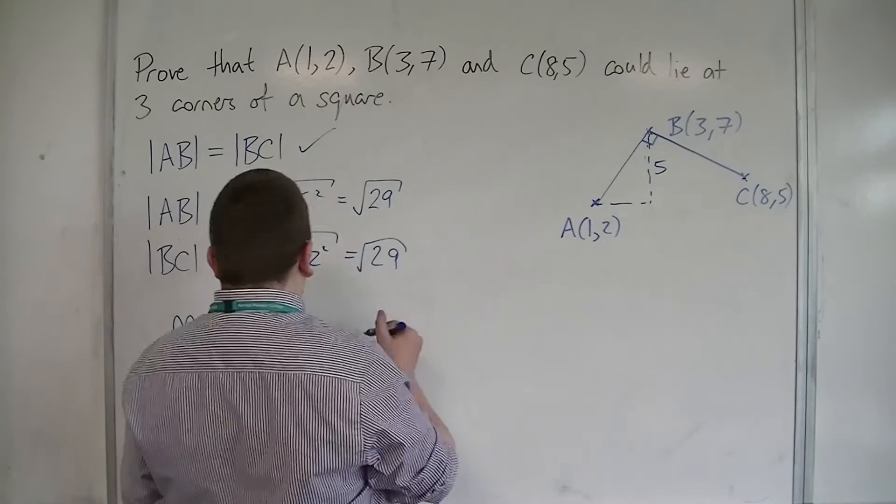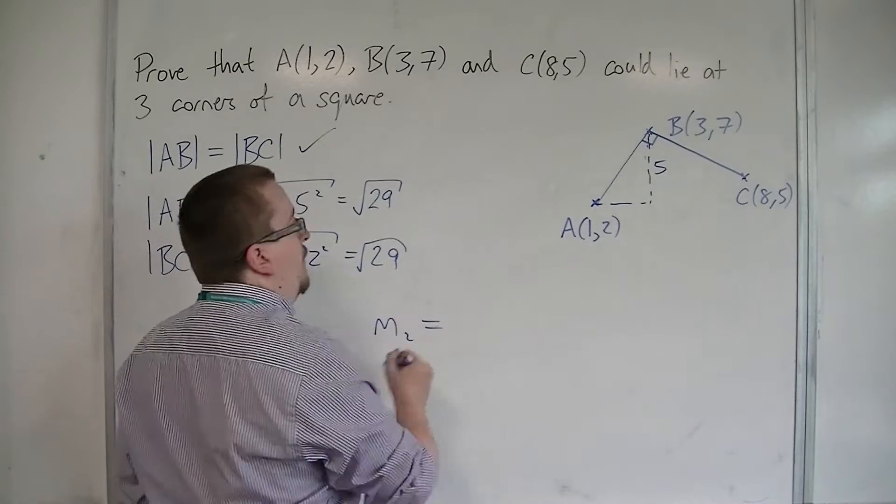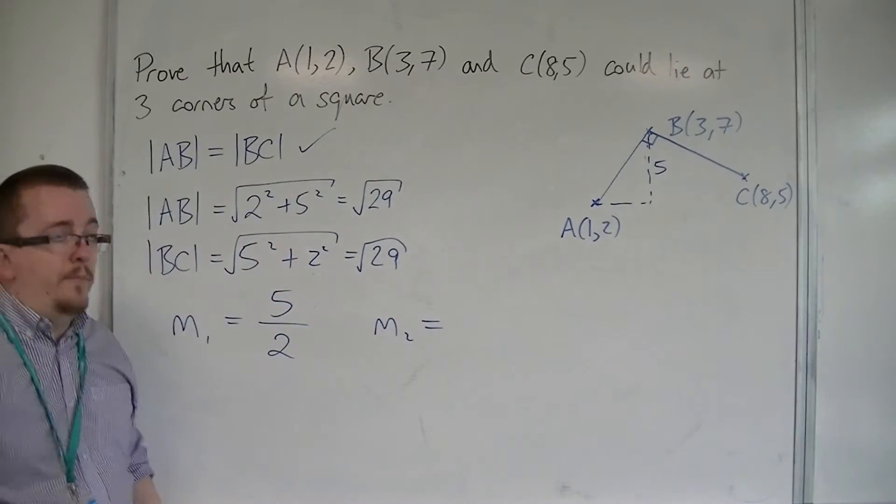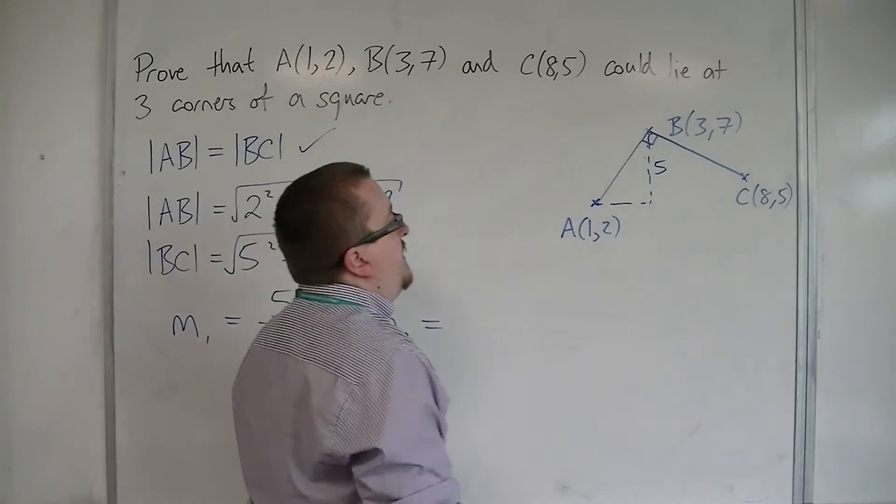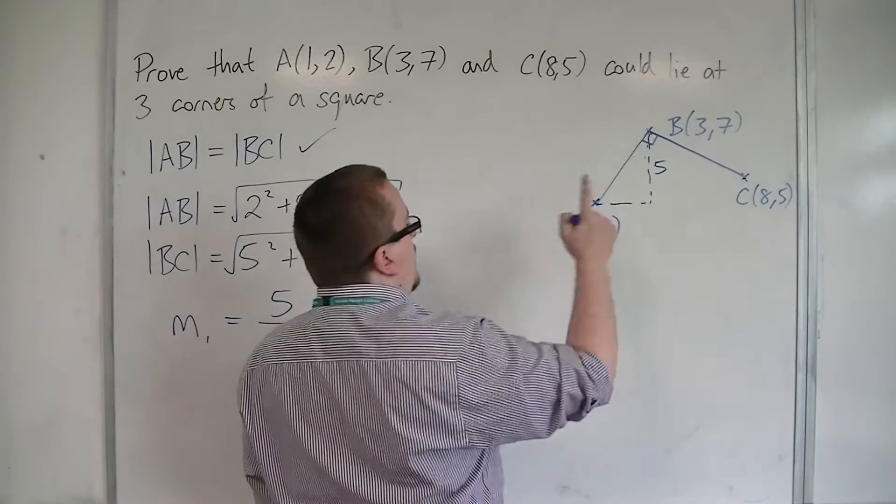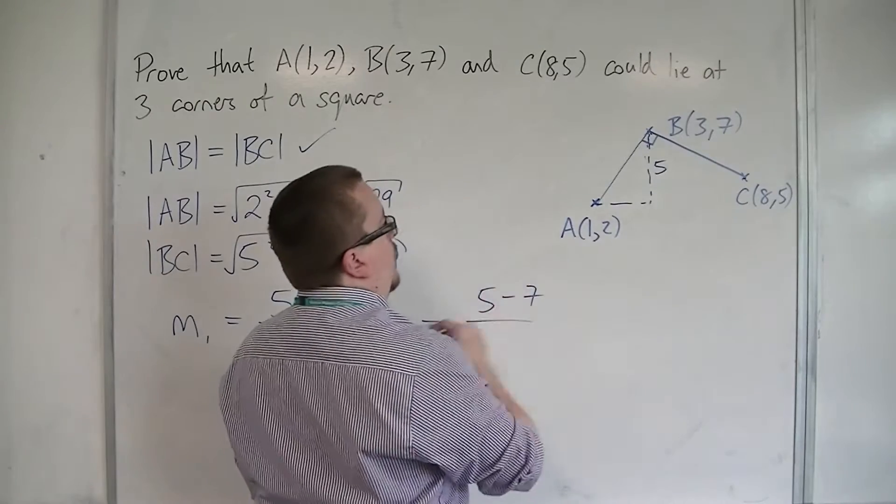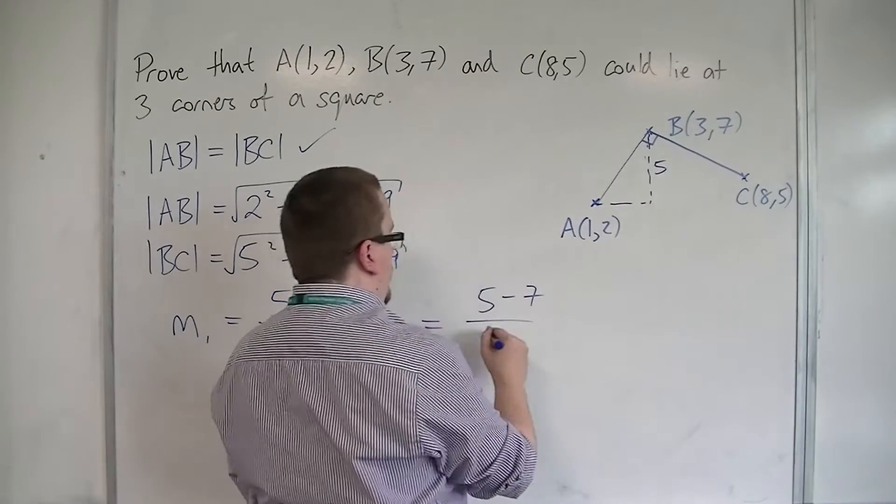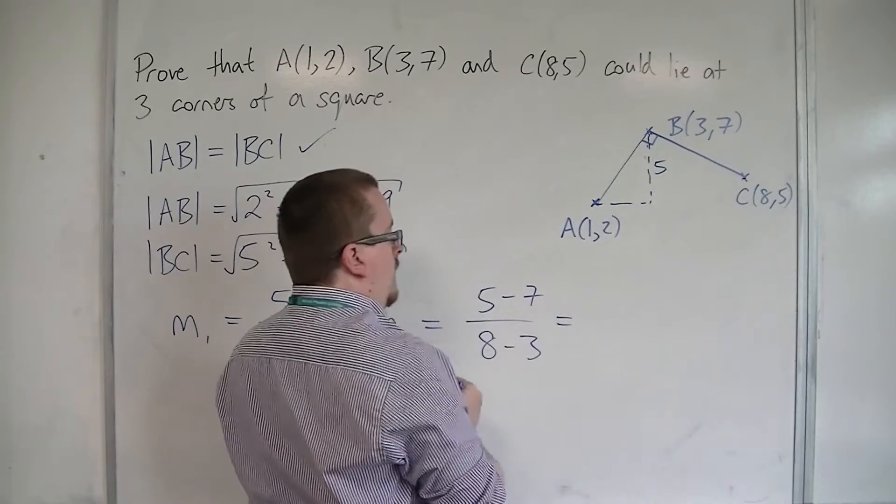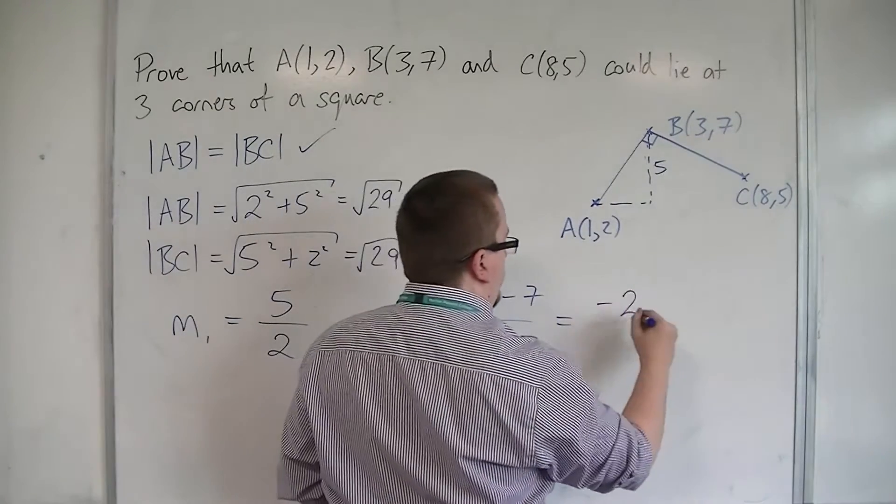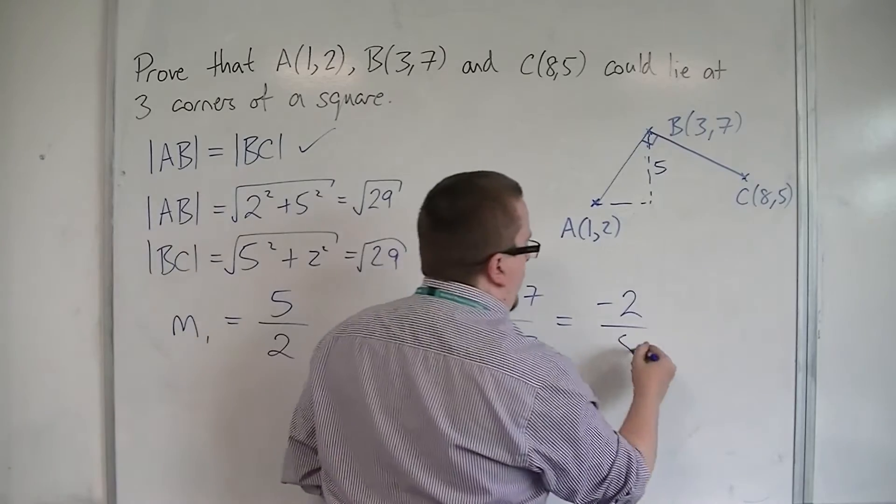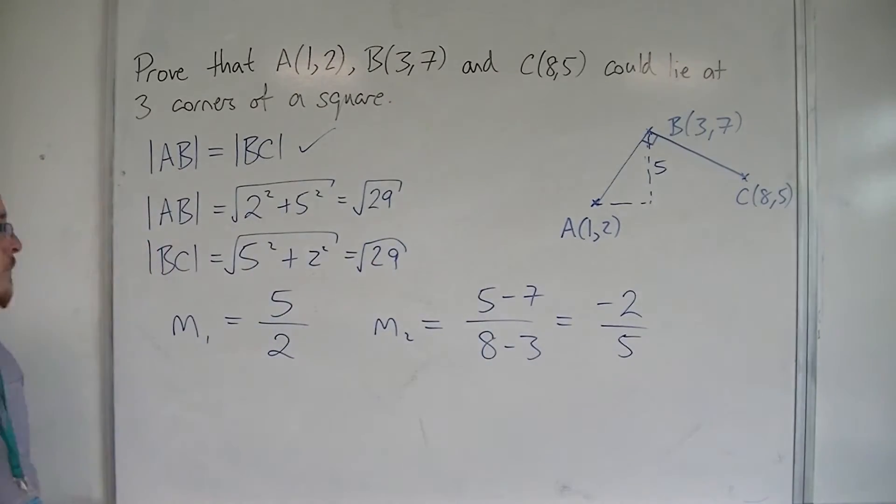If we now look at the gradient of BC, and I'm going to call that m2, then that's the difference in the y-coordinates, so 5 take away 7, all over 8 take away 3. So, we have 5 take away 7 is minus 2, and 8 take away 3 is 5.